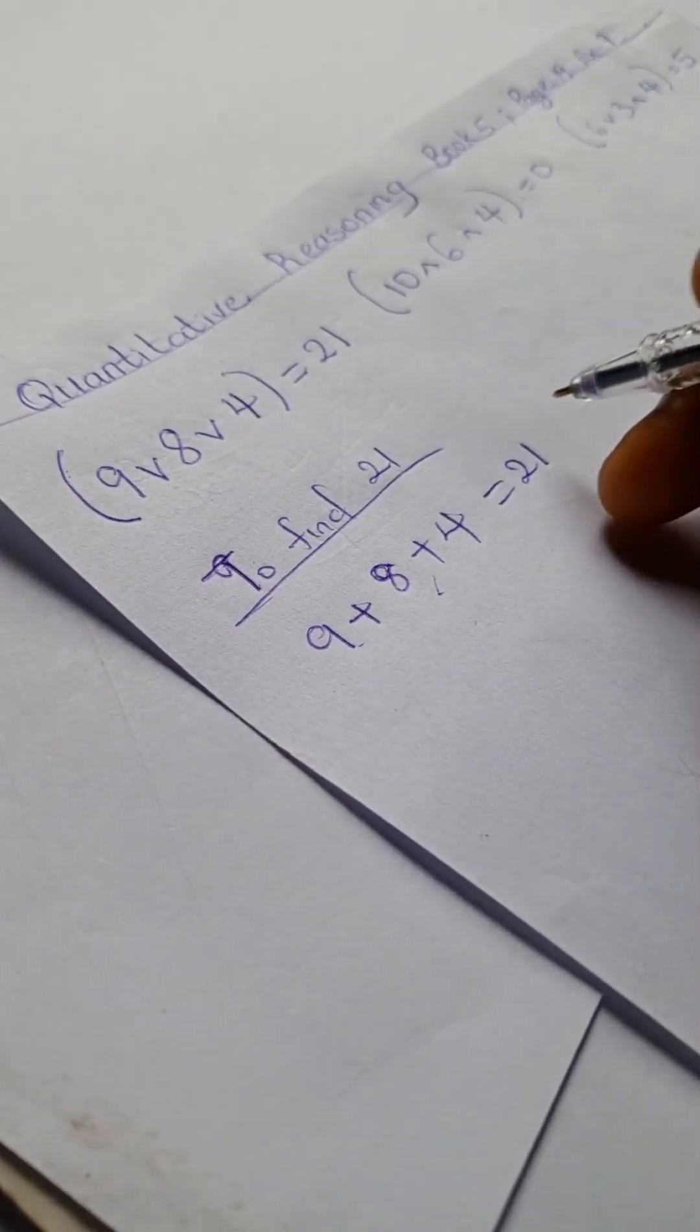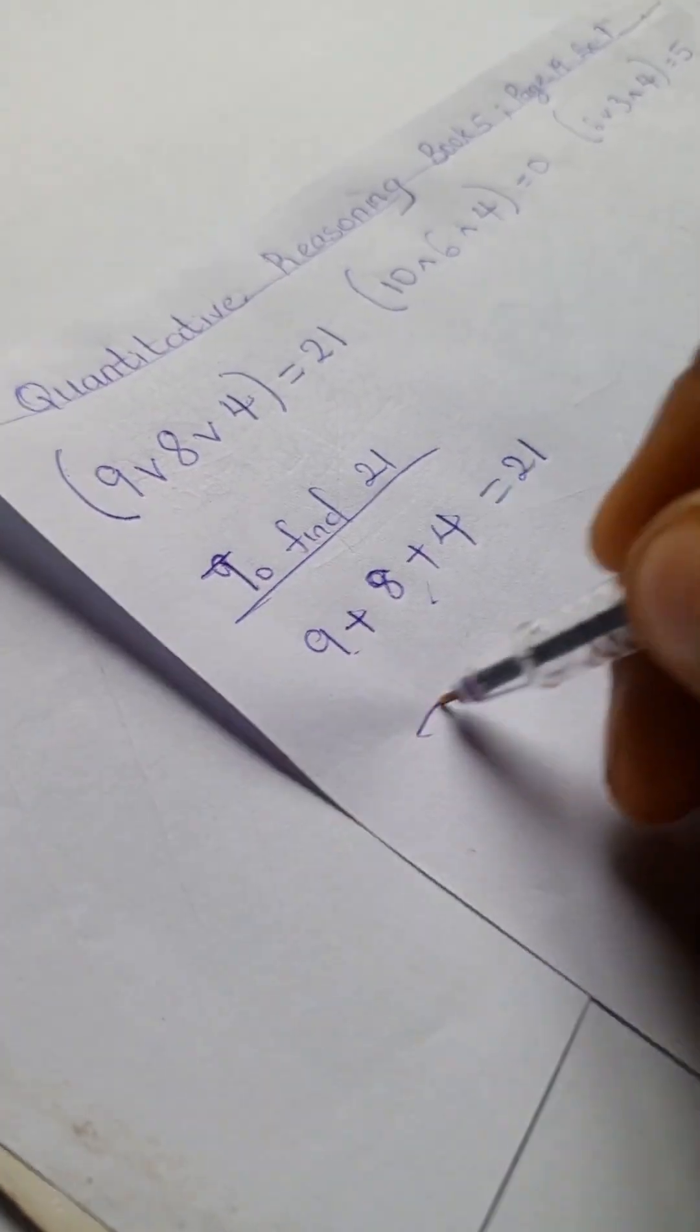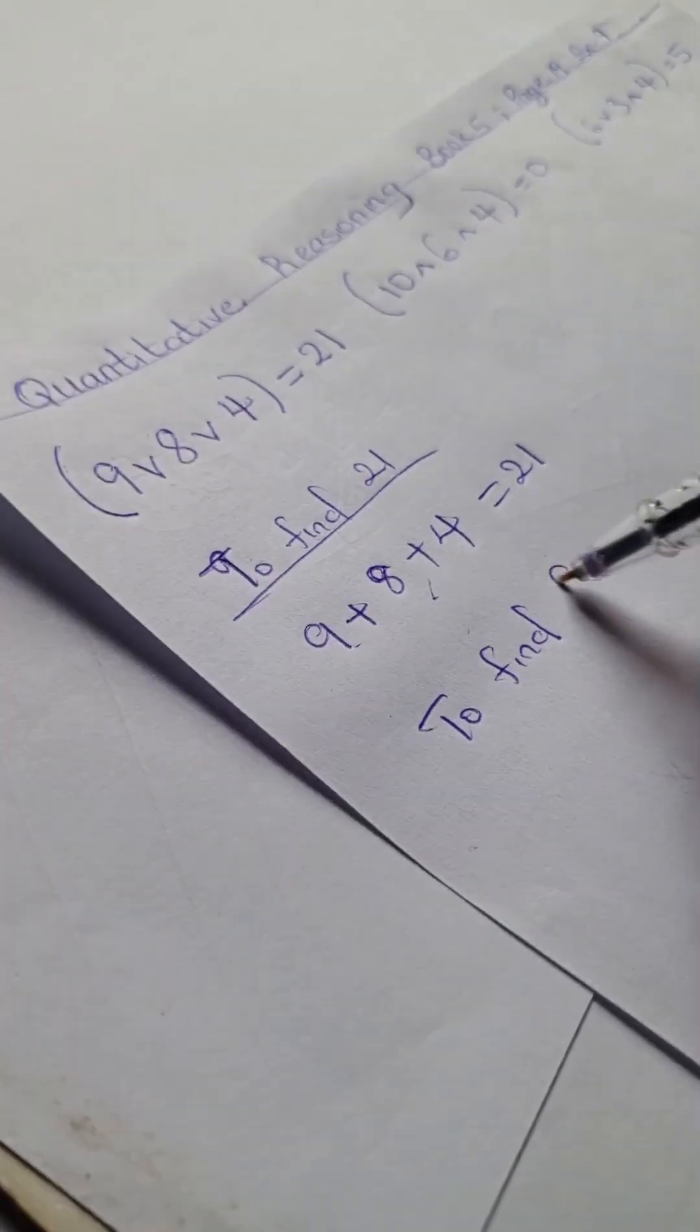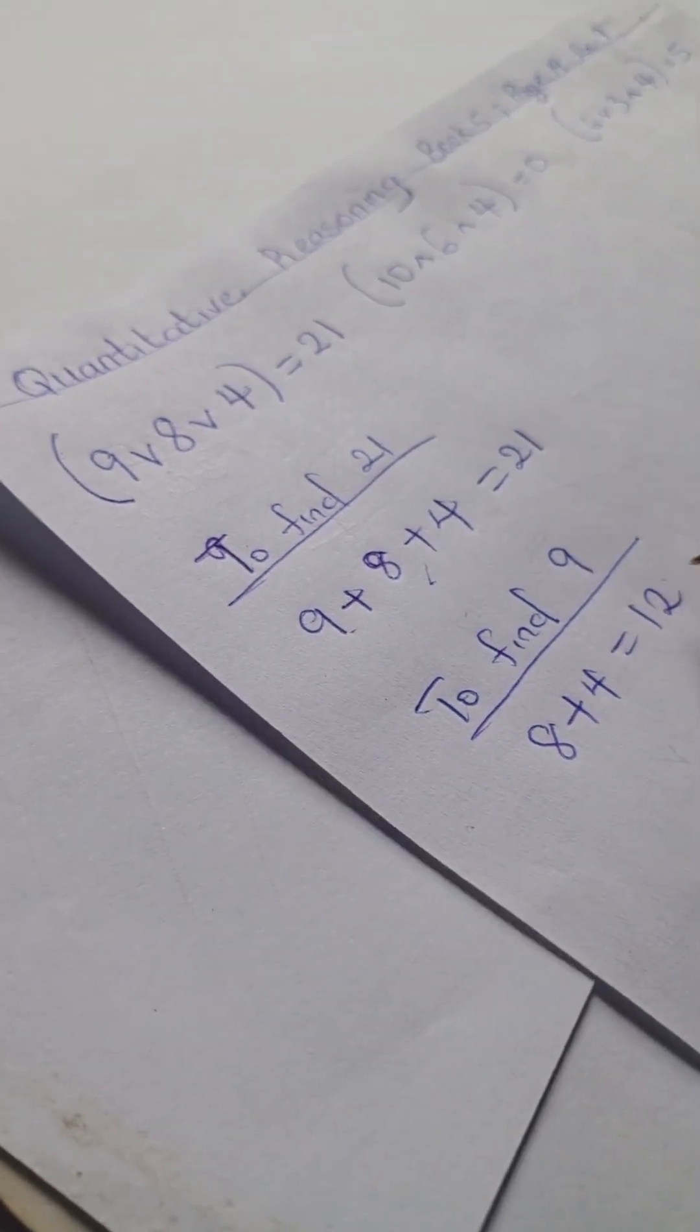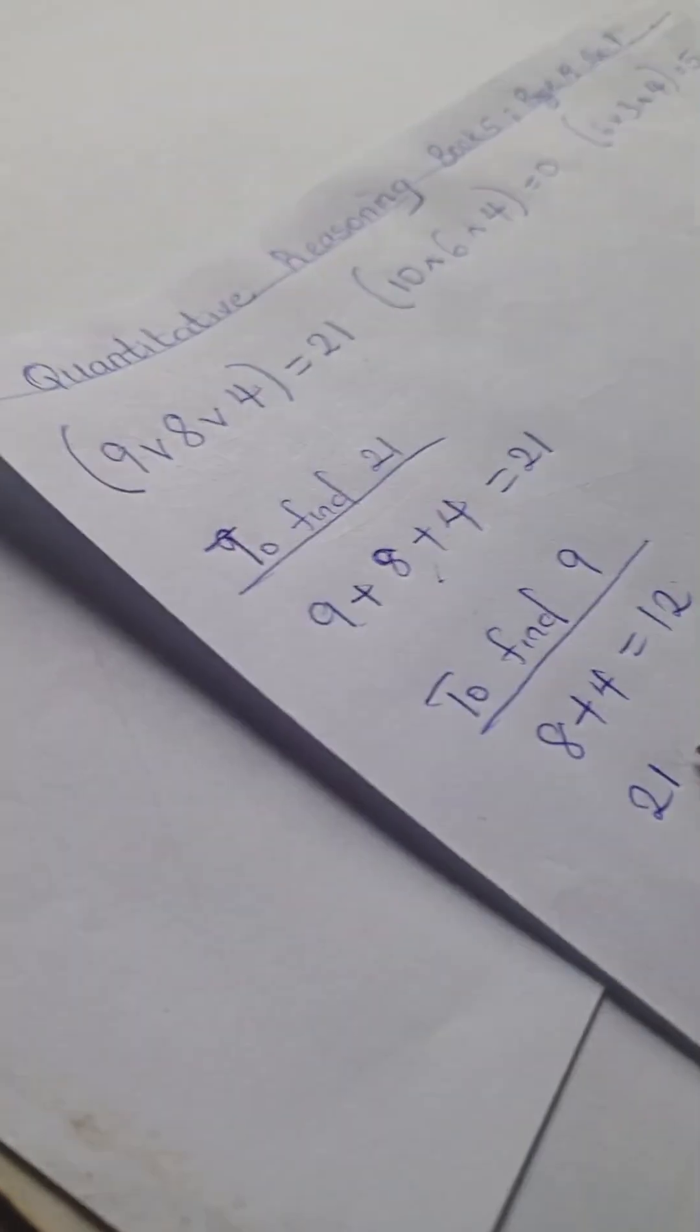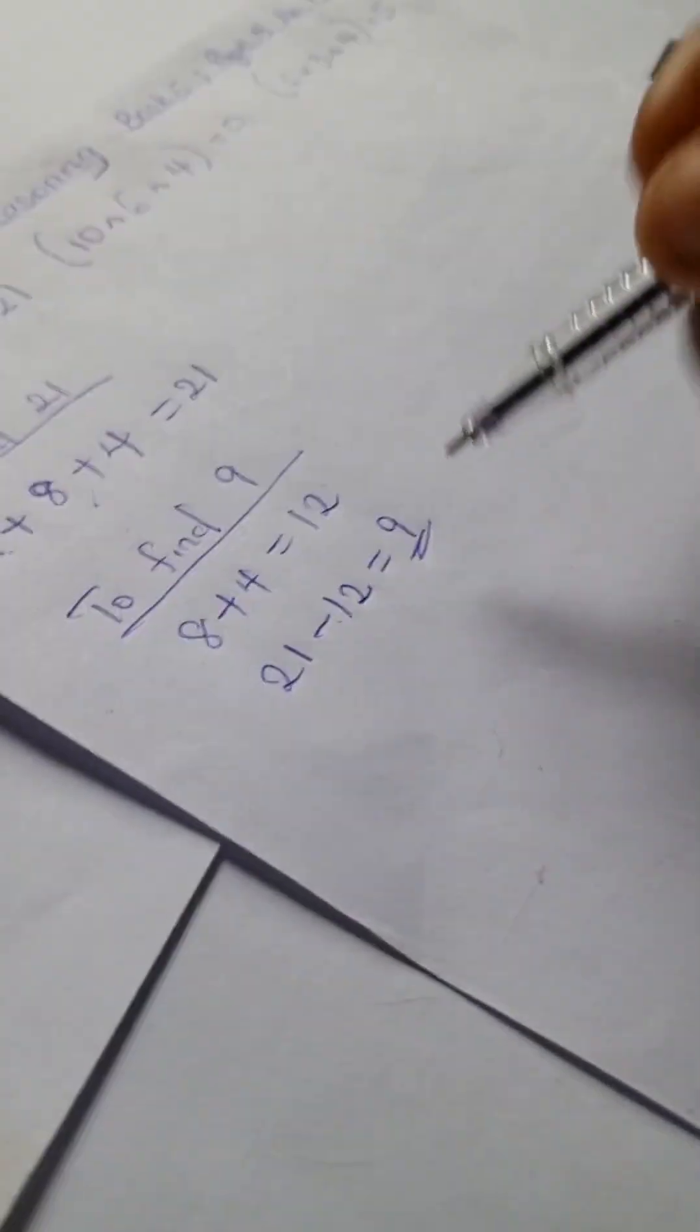So if you are to find any of those numbers here, we're going to have to find 9. We have 8 plus 4, which is 12, and 21 minus 12 equals 9. The same goes for the other numbers.